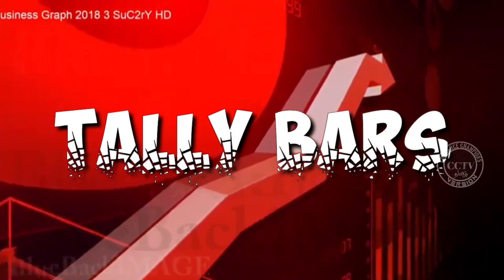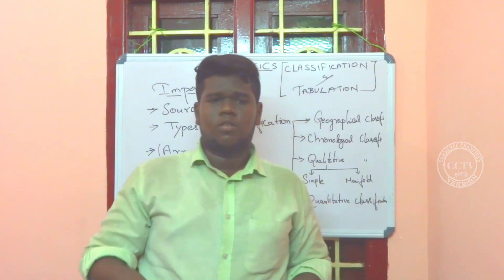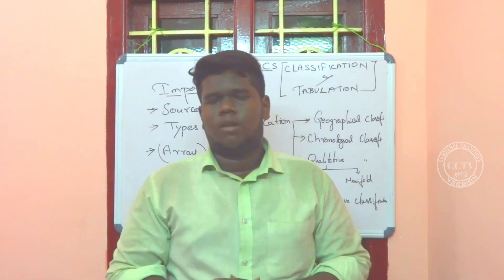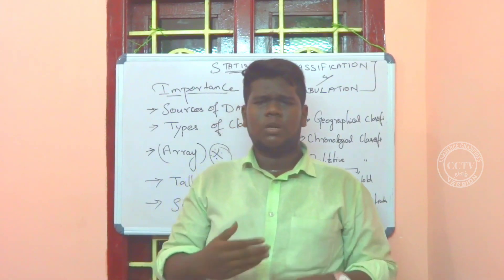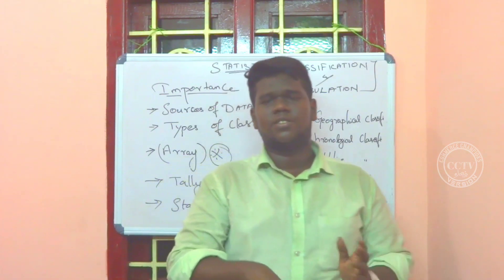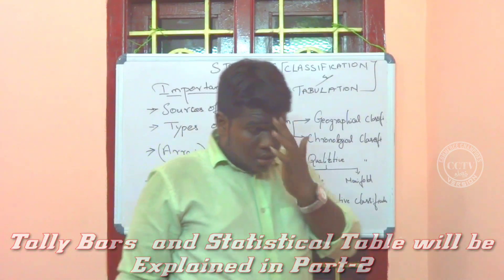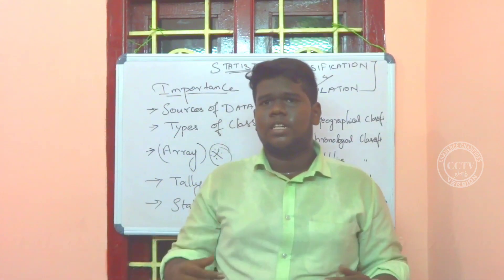Before we move on — tally bars. Where do you use the tally bars? If you have around 120 numbers, how do you convert them into frequency using tally bars? You use a number of tally lines to arrange repetitions correctly. Then we check out a statistical table and its components.